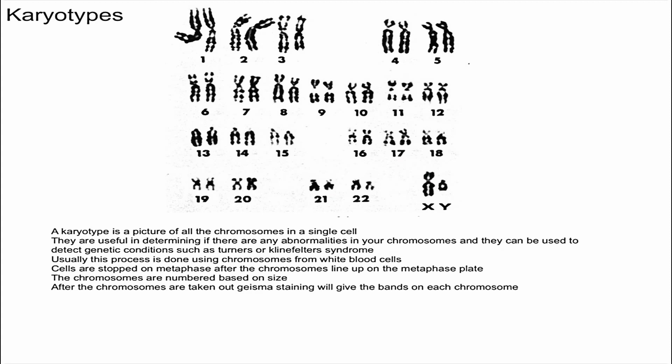The actual process is pretty complicated, but essentially you have to get the cell to stop during metaphase. You can do this by adding chemicals. The chemical that is added prevents the spindles from binding to the centromere, so the cell is stopped at metaphase. Once the cell is stopped at metaphase, you can take nice pictures of all of the chromosomes. After that, you can stain the chromosomes with a Giemsa stain that will give them the banding pattern — you can see some parts are darker and some parts are lighter.